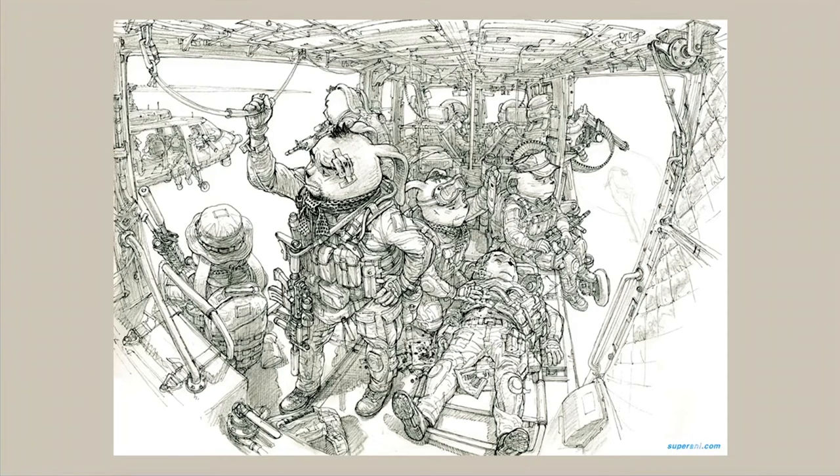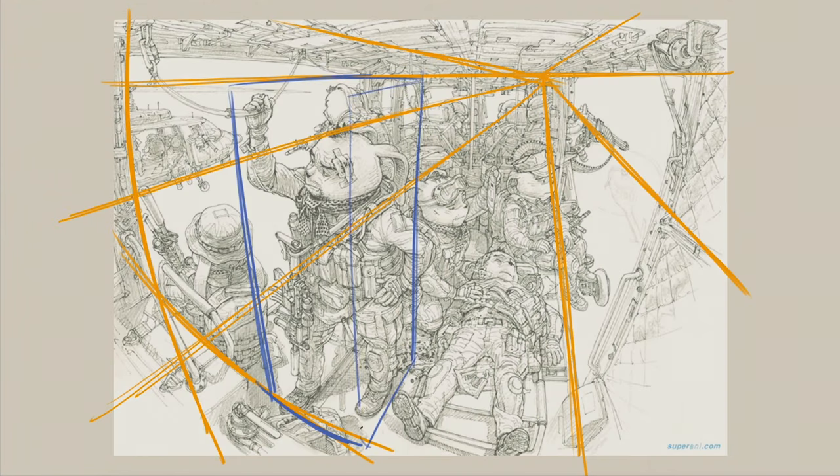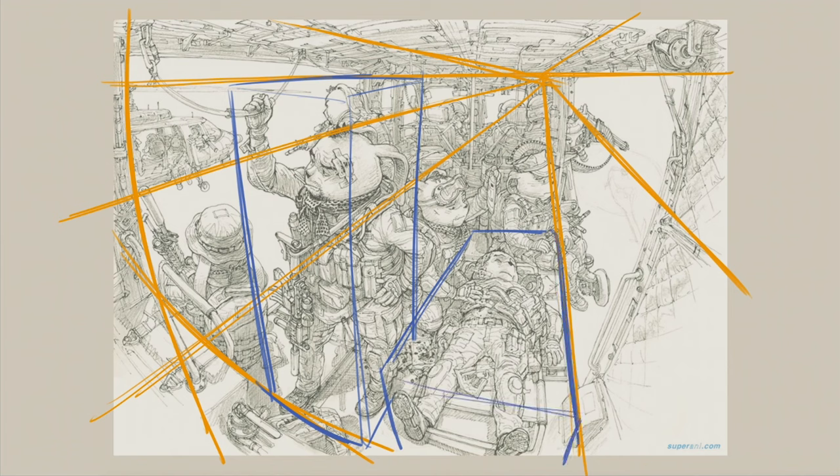But before we jump into rotating boxes, let's have a look at how a master uses rotation. If we look at this drawing by Kim Young-Gi, you'll see that perspective is a pretty important subject. If we decrease the opacity and draw boxes around some of these figures, you'll see that even those figures align with the perspective.